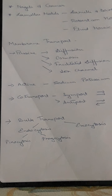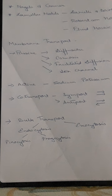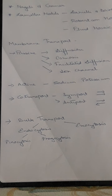Next is facilitated diffusion, where some molecules that cannot pass through the membrane on their own require the help of proteins called porins, which facilitate their passage from one surface to the other. Ion channels are also part of this process and are highly specific — only specific channels exist for each ion, and many ions cannot pass through a single channel.